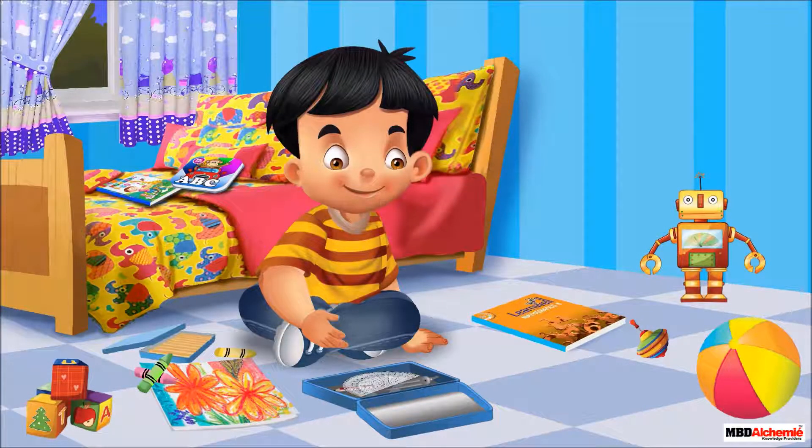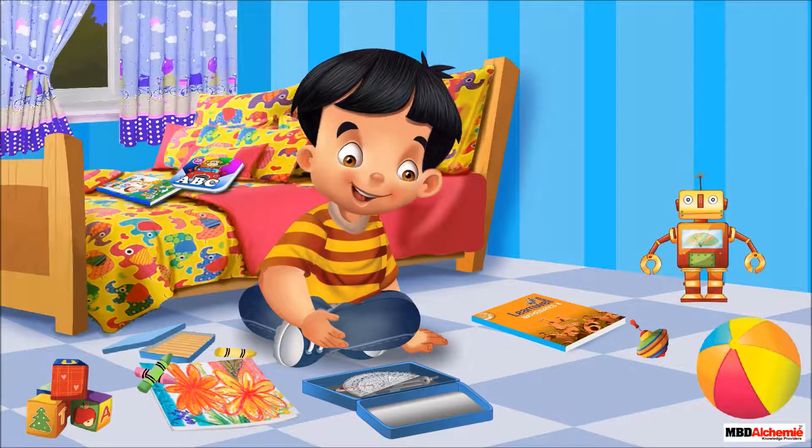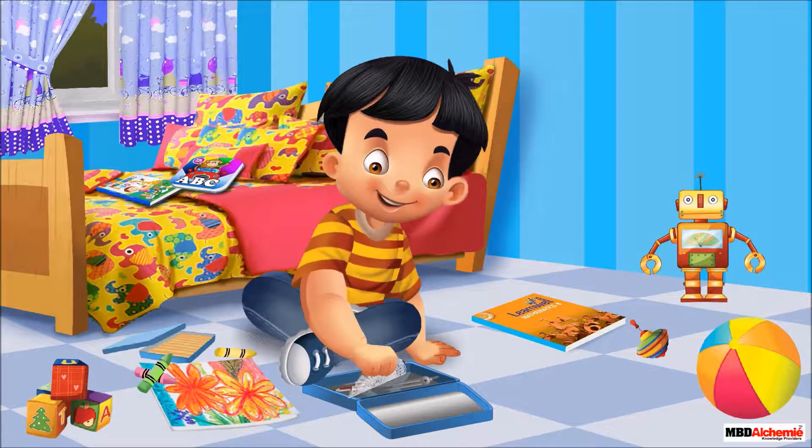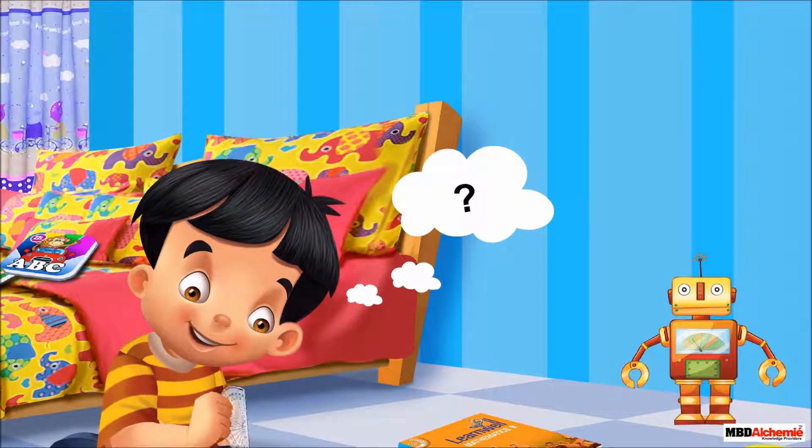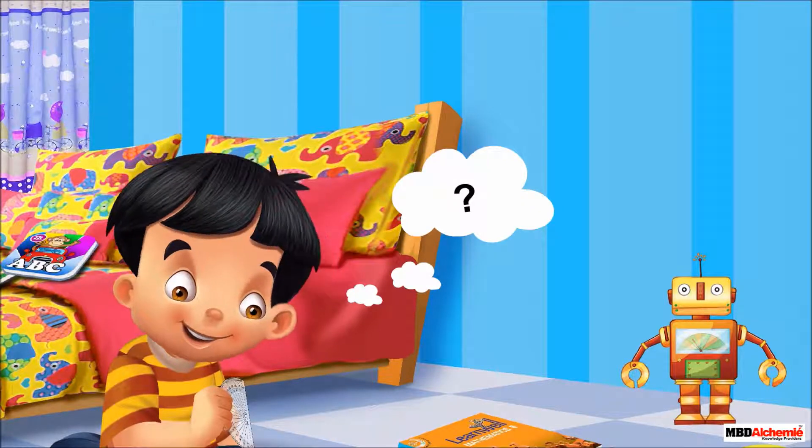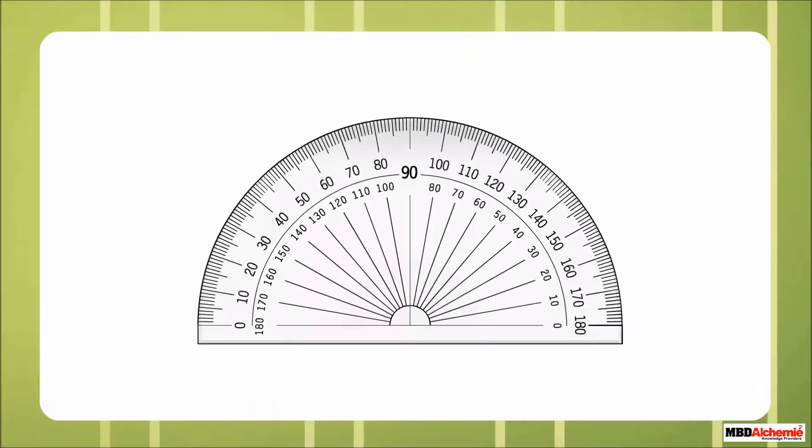Sid is sitting on the floor. He got a semicircle-shaped object. He was guessing about this object. Then his mother comes. She tells him that it is a protractor. It is used to measure angles.